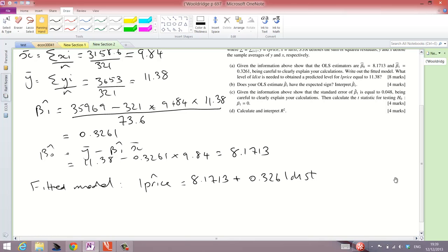And then there's a little bit of forecasting here. What level of L dist is needed to obtain a predicted level for L price equal to 11.38? Well, if L price equals 11.38, then that means 11.38 equals 8.1713 plus 0.326 L dist.